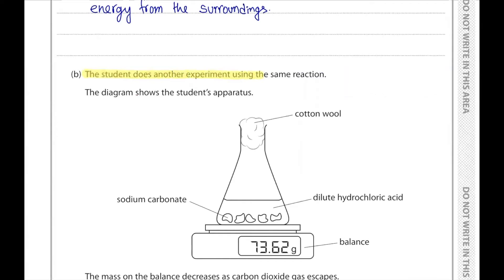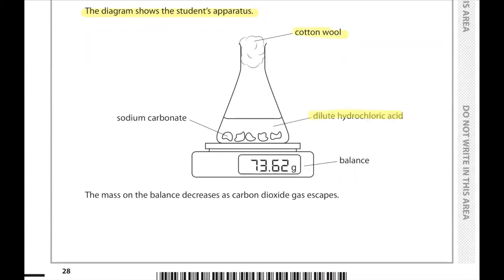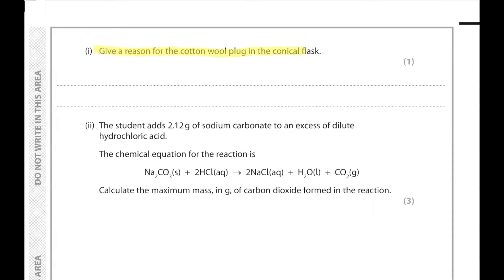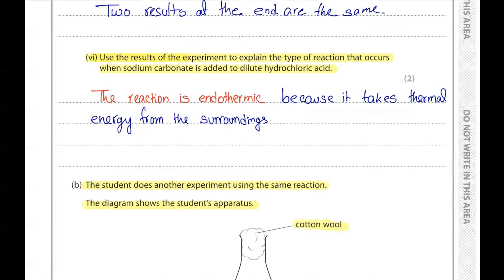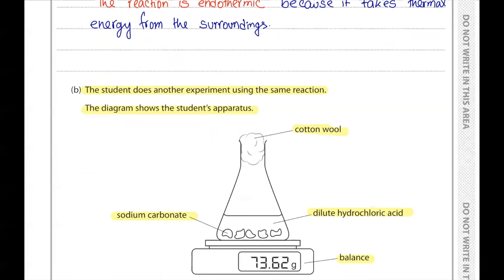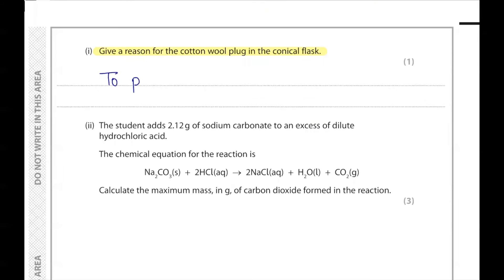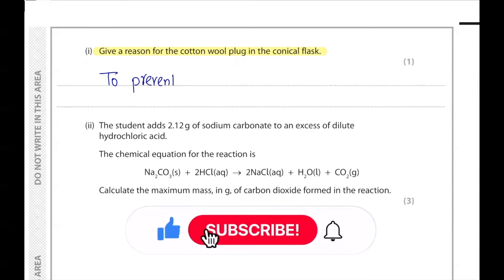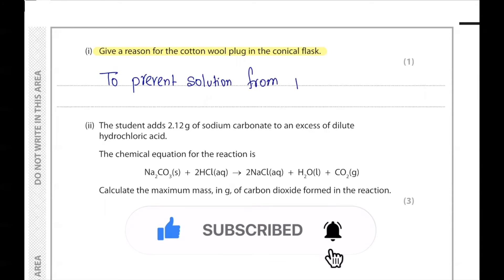Question 9b1. The student does another experiment using the same reaction. The apparatus includes cotton wool, dilute hydrochloric acid, sodium carbonate, and a balance. The mass on the balance decreases as carbon dioxide gas escapes. Give a reason for the cotton wool plug in the conical flask. In this reaction involving carbonate and acid, a lot of effervescence and bubbles occur. When the bubbles burst, they splash. The cotton wool prevents the solution from splashing out.